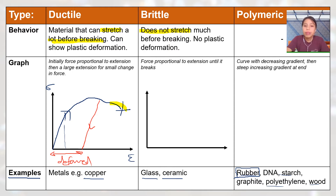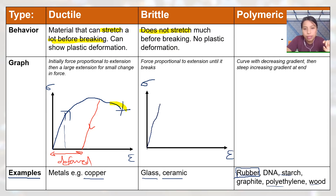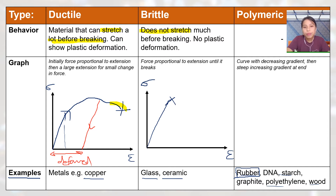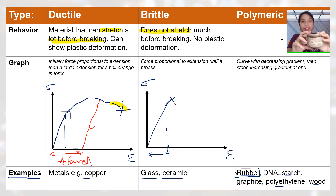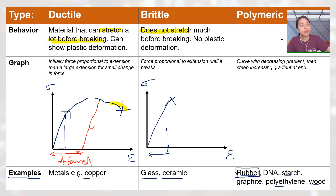Brittle material is not too different — it's just much smaller in strain. Brittle materials can still change length a little bit, but not much. Usually the graph is pretty steep — a straight line — and beyond that they break. This ceramic cup, for example: if you try to pull it apart, it may change length a very small amount, but beyond that it's just going to break. It just obeys Hooke's law and then everything breaks. Same for glass, ceramics, and kitchen plates — be very careful.